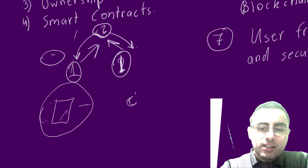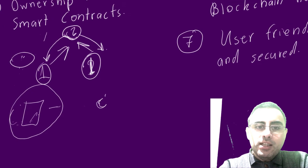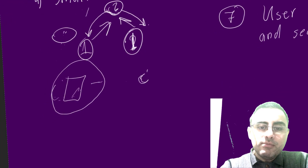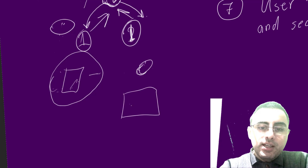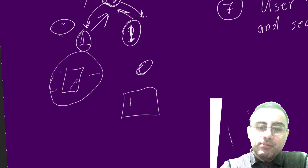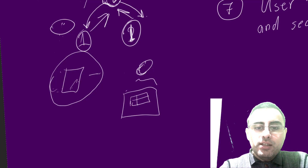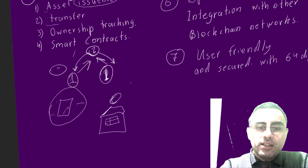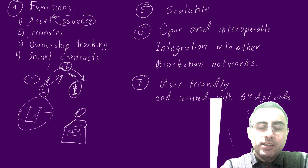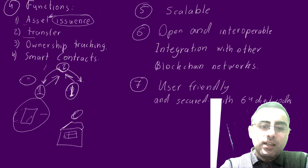Another example: you can create your own token and sell it. And third, if you have a business, you can create loyalty membership programs or track important customer information. You can use smart contracts and this technology in many different areas.